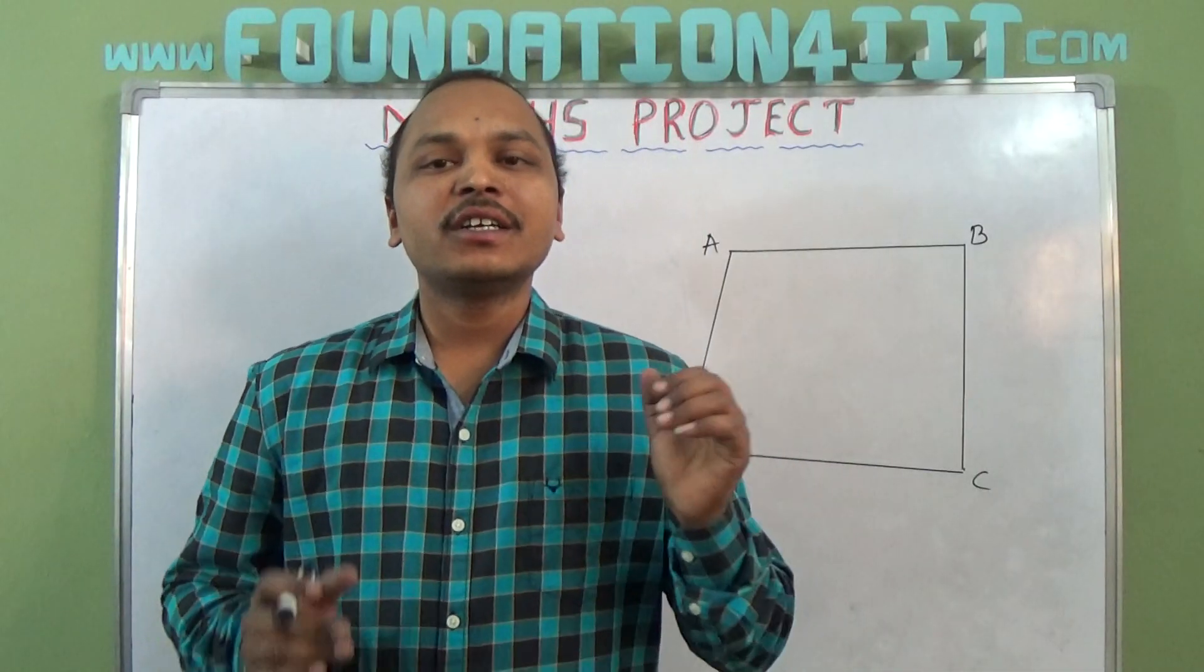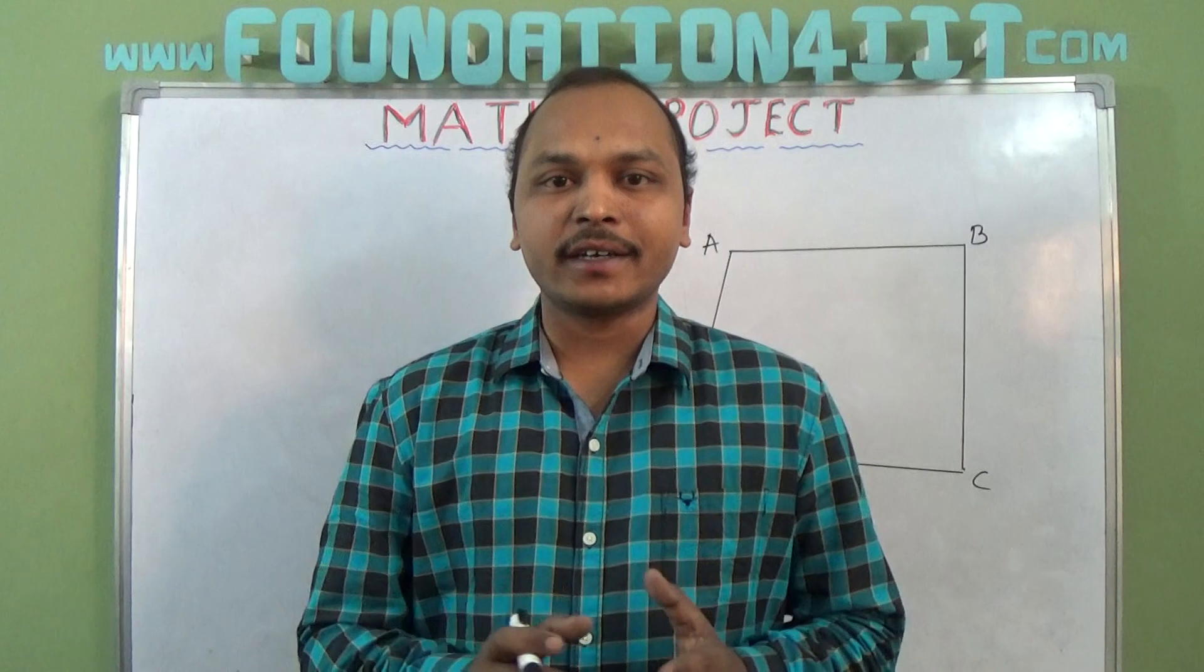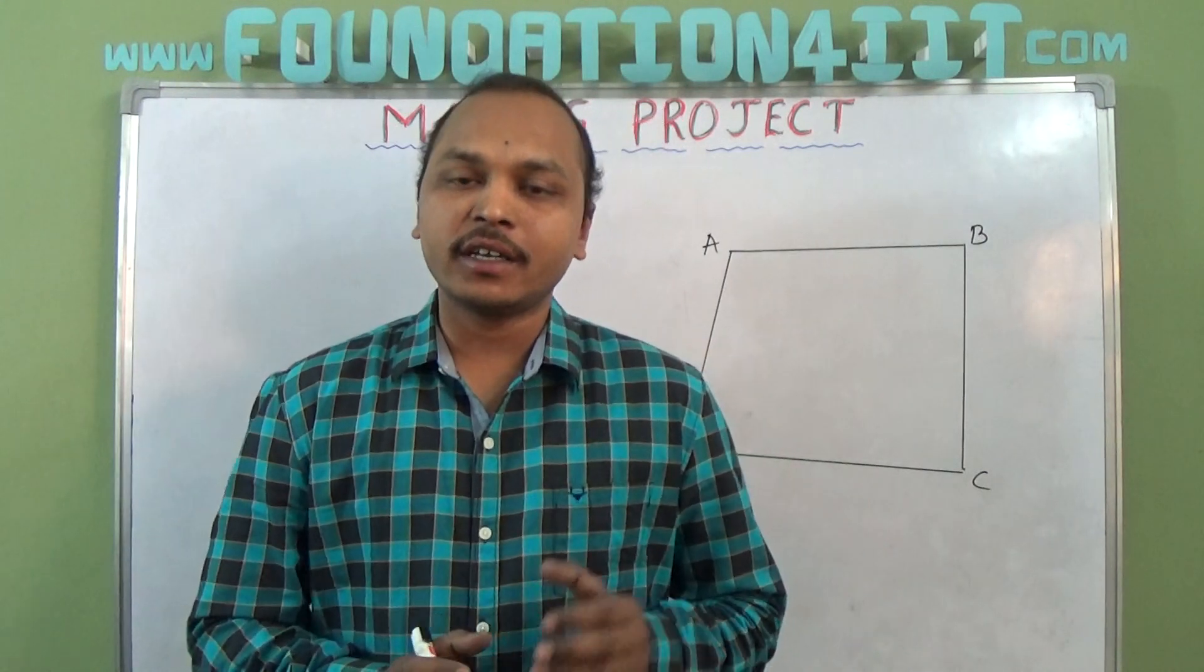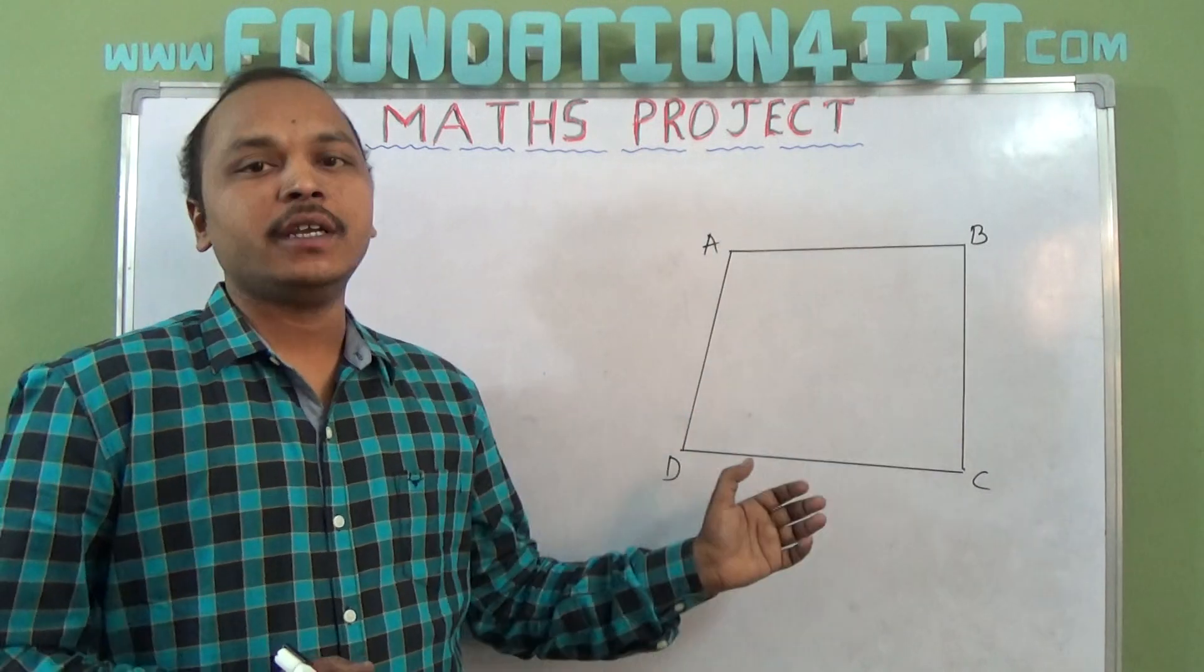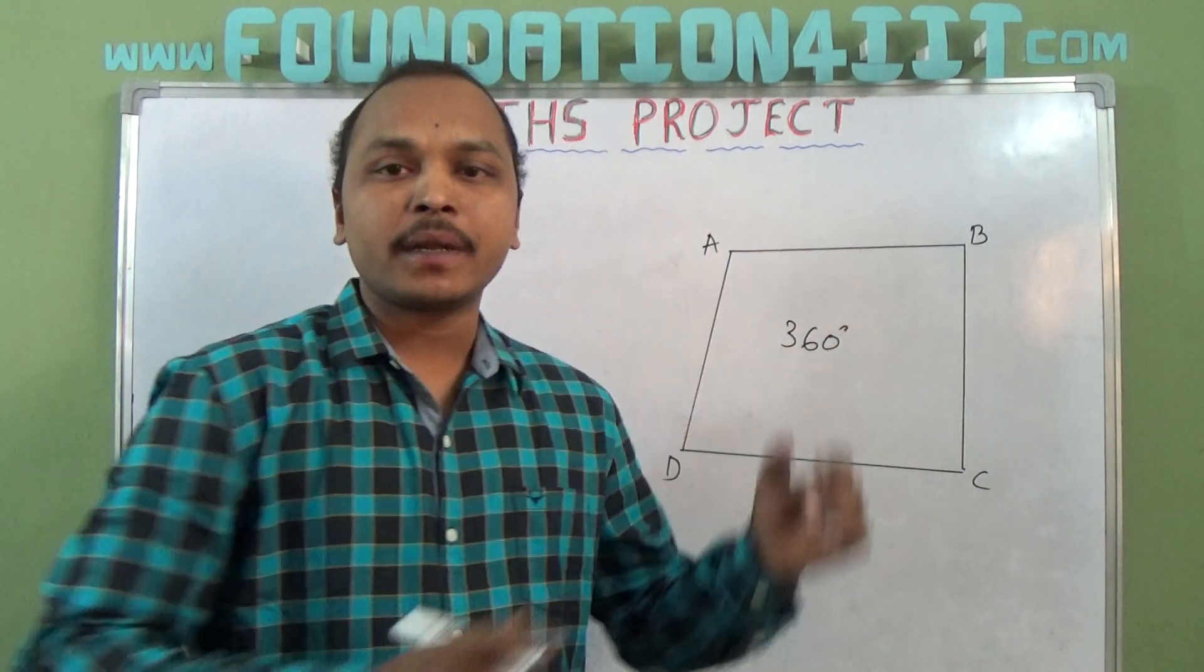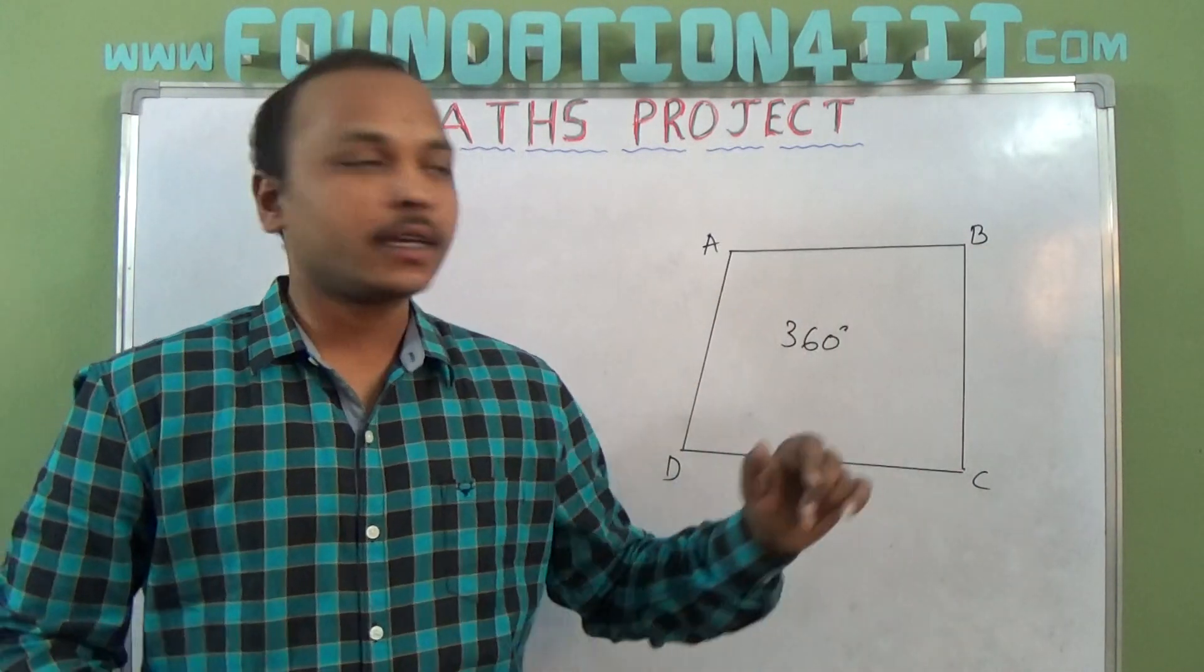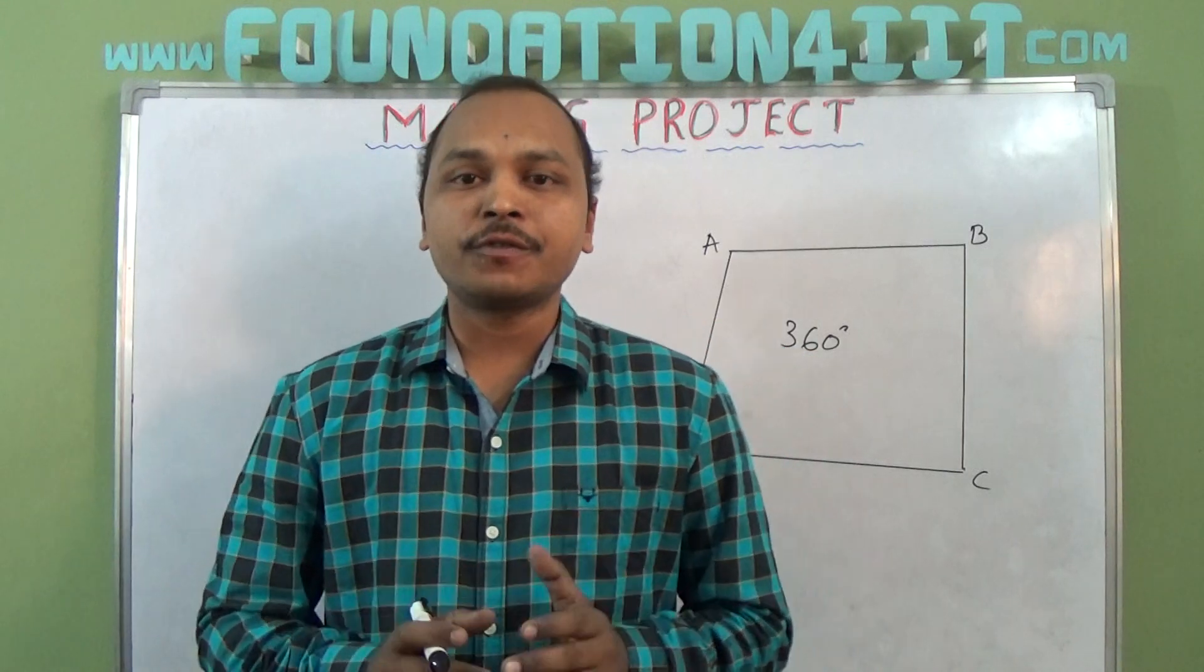Welcome to educational channel. In this video I will explain a simple math project. The sum of angles in a quadrilateral is 360 degrees. Observe here ABCD, we need to prove that angle A plus angle B plus angle C plus angle D equals 360 degrees. A quadrilateral is a closed figure having four sides.